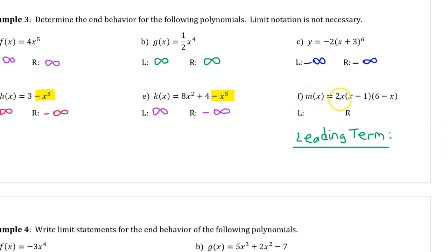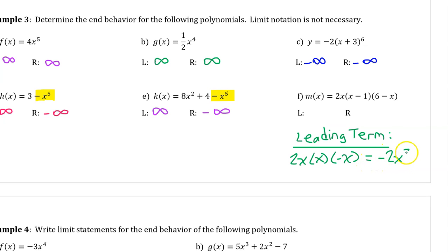For part f, when a function is written in factored form, you can figure out the leading term by focusing on the leading term of each factor — in this case, 2x times x times negative 6. Multiplying those together gives negative 2x³. So the right end behavior approaches negative infinity because the leading coefficient is negative, and since the degree is odd, the left end behavior approaches positive infinity.